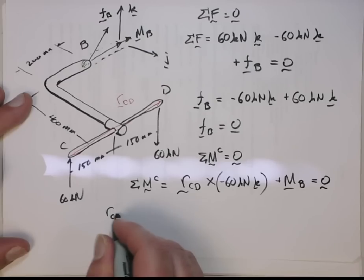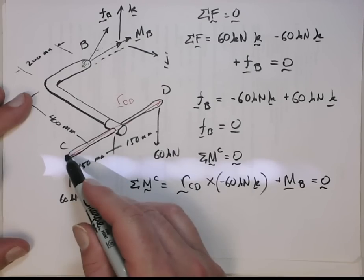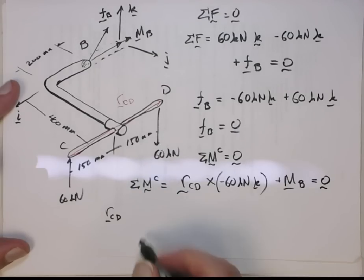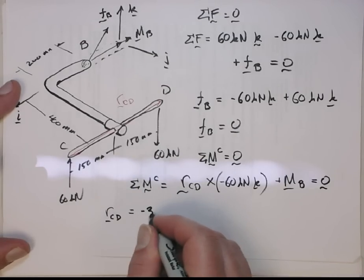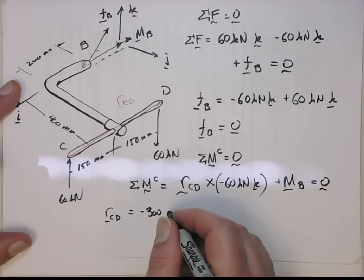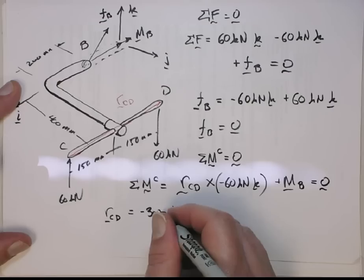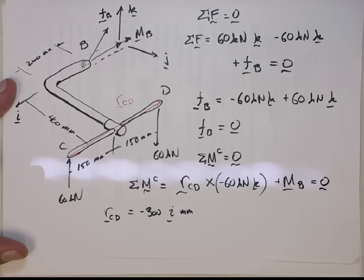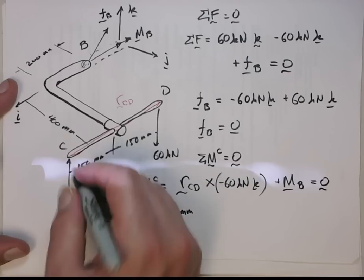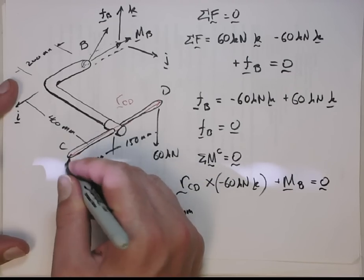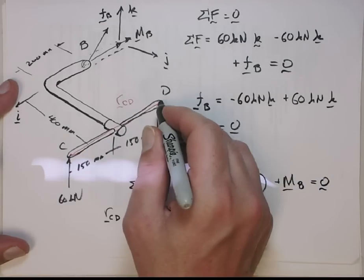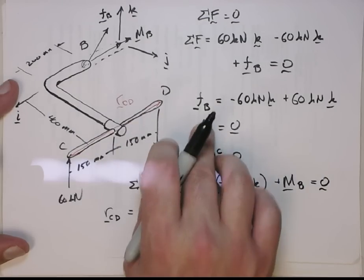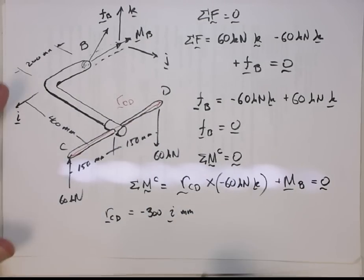Alright. So RCD. What's RCD? Well, RCD is a straight line vector in the minus i direction, and the magnitude of it is 300. So it's minus 300 millimeters in the i direction. Okay? So that is RCD. I'm sorry. RCD. So remember, you have to make sure you be careful. It's from point C to point D. It's from the point where you're taking the moments about to the point where the force is being applied.